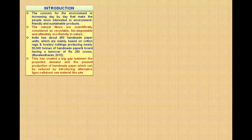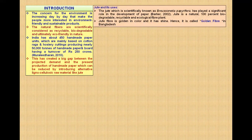Coming to the introduction part, we have concern for the environment is increasing day by day, that makes people more interested in environment-friendly and sustainable products. Natural fibers are scientifically considered as recyclable, biodegradable, and ultimately eco-friendly in nature. India has about 450 handmade paper units which are mainly based on cotton rags and hosiery cotton cuttings, producing nearly 50,000 tons of handmade papers and board with turnover of rupees 250 crores. This created a big gap between projected demand and present production of handmade paper fiber, which can be reduced by introducing alternative lignocellulosic raw material like jute.